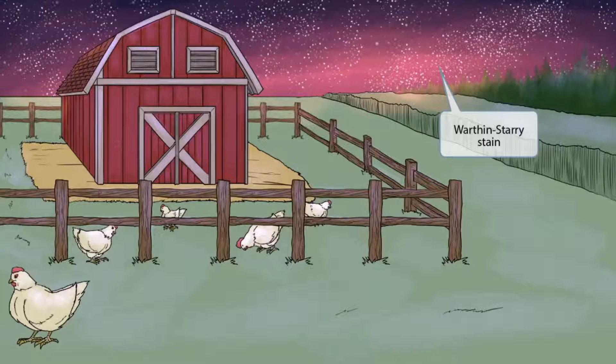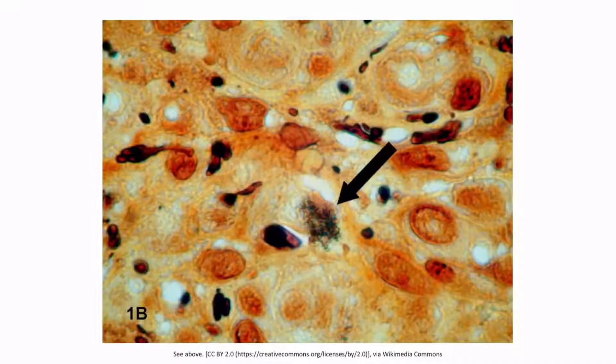In addition to the pink sky, notice that we've made it appear as if it's night and the sky is filled with stars. The starry sky is to help you remember that Bartonella can also be identified using the Warthin-Starry stain. This is a silver-based staining method and can be used to identify Bartonella.